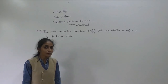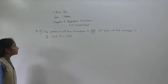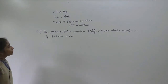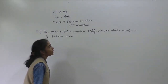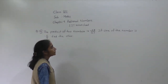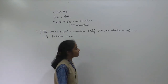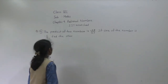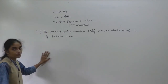Good morning students. Let's start IIT worksheet question number 13. The product of two numbers is minus 28 upon 27. One of the numbers is minus 5 upon 9, and the other is to be found.